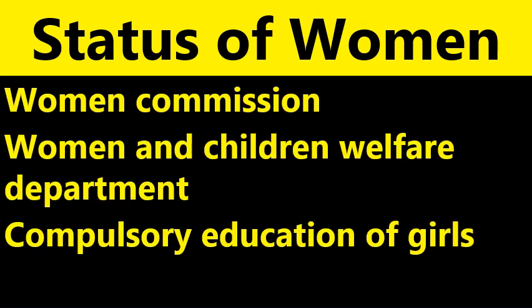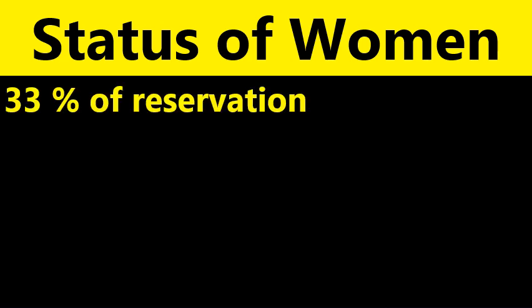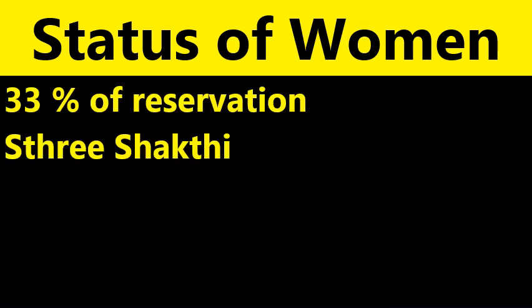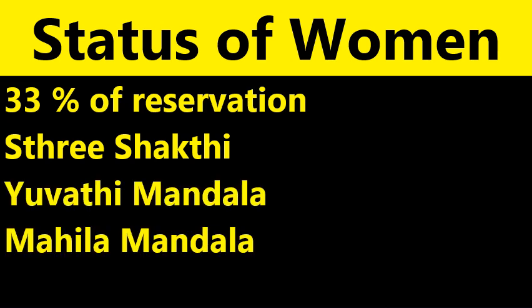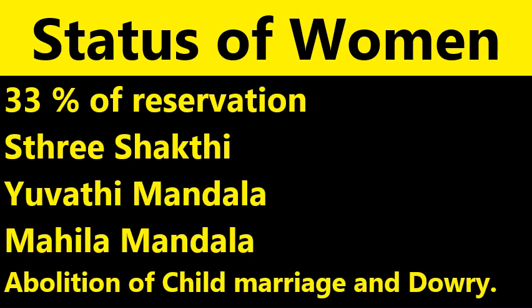Likewise, how to improve the status of women: Women Commission and Women and Children Welfare Department are established. Compulsory education for girls, 33% reservation, Sri Shakti, Yuvati Mandala, Mahila Mandala, and abolition of child marriage and dowry are the measures taken to improve the status of women.